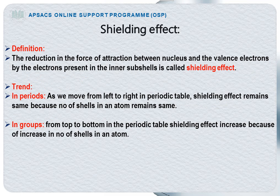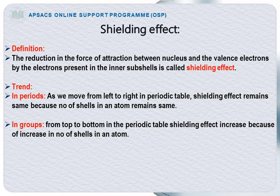The first property is Shielding Effect. Definition: The reduction in the force of attraction between the nucleus and the valence electrons by the electrons present in the inner subshell is called shielding effect. In elements, when the number of shells increases, the number of inner electrons also increases. These inner electrons shield the nucleus from the valence electrons. As a result, the attraction of the valence electrons with the nucleus decreases — that reduction in the force of attraction is called shielding effect.